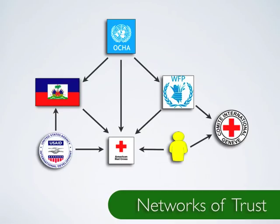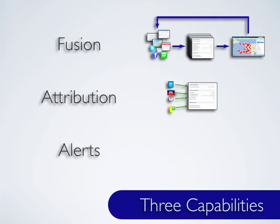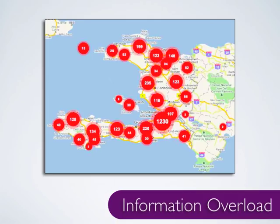An alternative approach is to retain the source attribution of the data as it undergoes the data fusion process. Source attribution can enable networks of trust between groups and individuals. Attribution supports trust between organizations, but those interacting with the platform will eventually be faced with information overload.